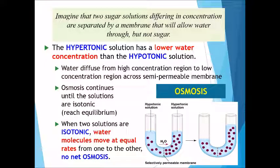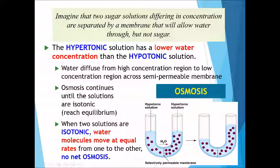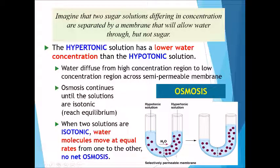Imagine two sugar solutions differing in concentration — one with low concentration and another with high concentration — separated by a selectively permeable membrane that only allows water through, not sugar. The hypotonic solution has a lower concentration of solutes compared to the hypertonic solution, so water will diffuse from the high water concentration region to the low water concentration region across this semi-permeable membrane. Osmosis continues until the solutions reach equilibrium, which is the isotonic state.